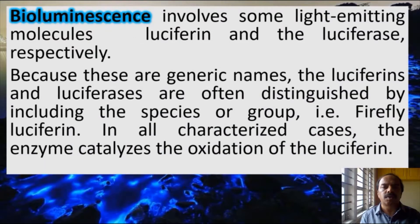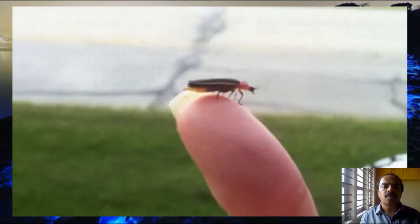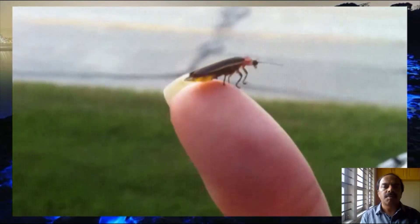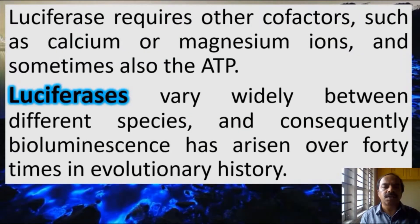Bioluminescence involves some light-emitting molecules. There are two important chemicals involved: luciferin and luciferase. Luciferase is the enzyme that requires cofactors — calcium, magnesium, and ATP. It converts luciferin into oxyluciferin, and this chemical reaction results in the emission of light.